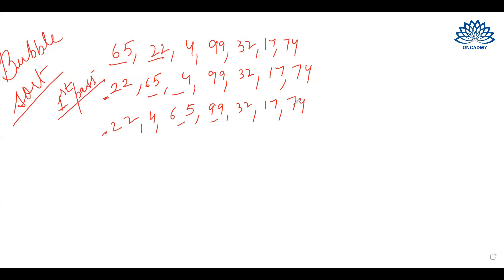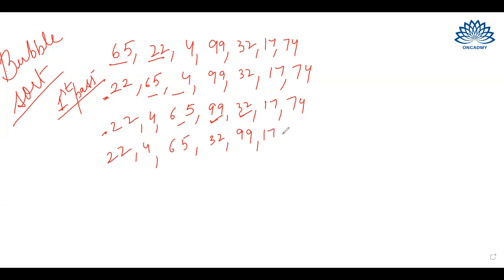Now we will compare 99 with 32. These two elements will be compared in the next iteration. 32 is smaller than 99, so we will swap them.